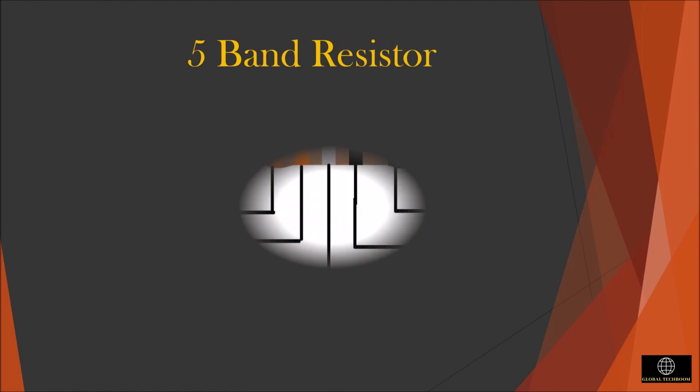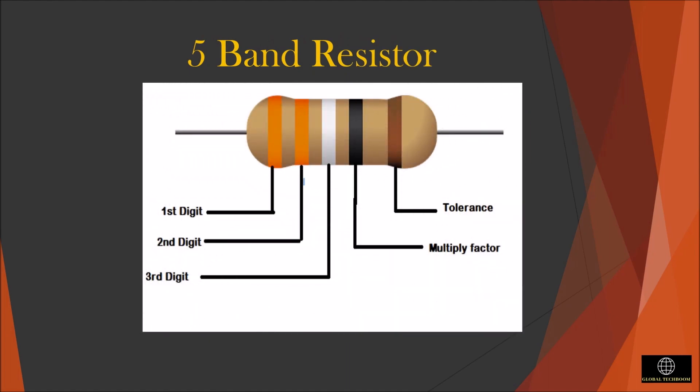In five band resistor, the first three colors will represent the first three digits of the value. The fourth color represents the number of zeros to be added and the fifth band represents the tolerance value. While in sixth band, the sixth band will represent the temperature coefficient.